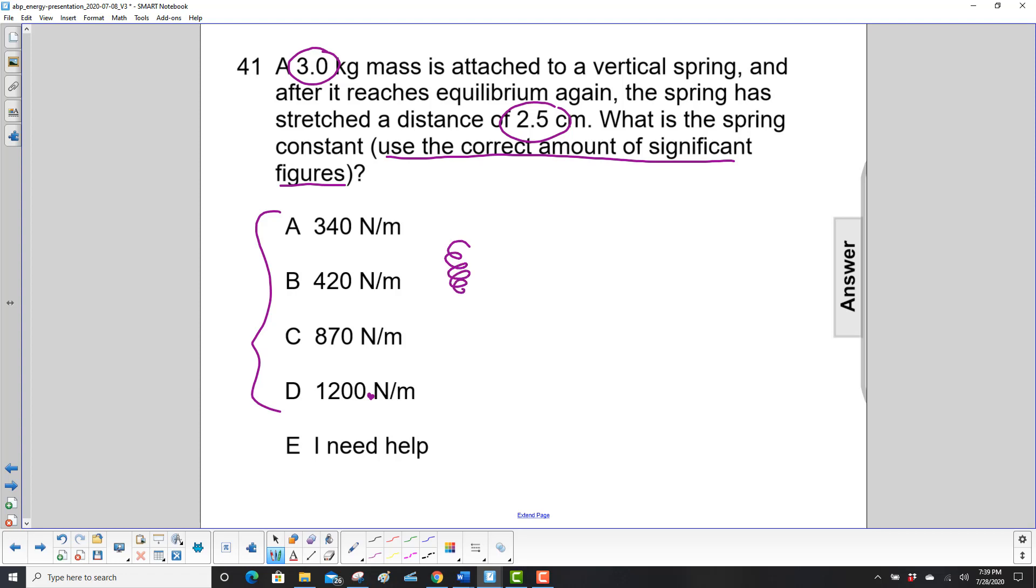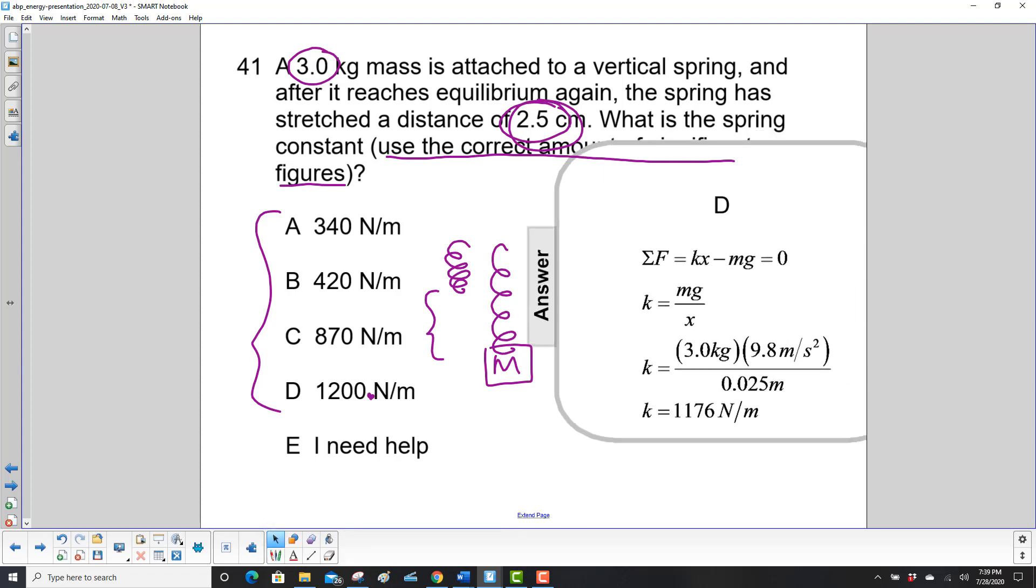What do we have here? We have a spring just sitting here, then we put a mass on it and the spring stretches. This distance here is the 2.5 centimeters.